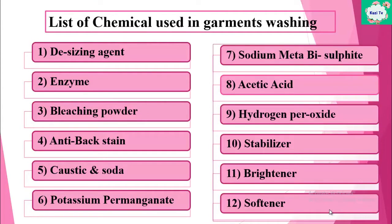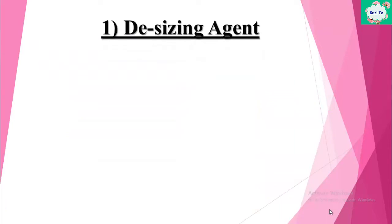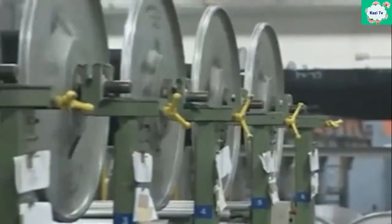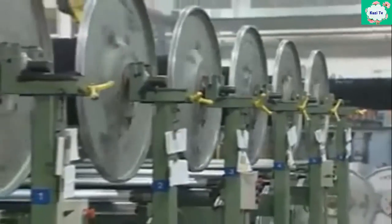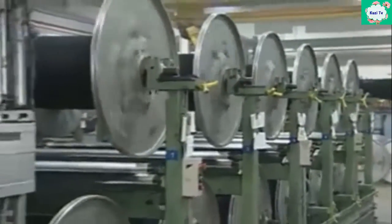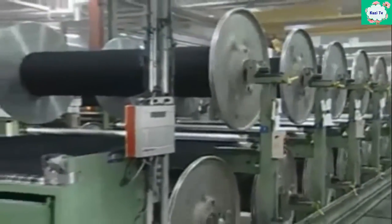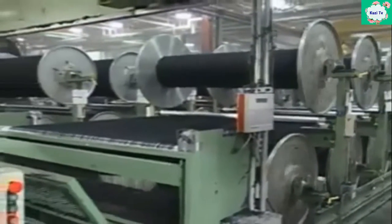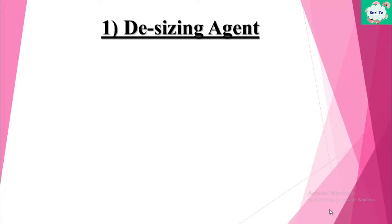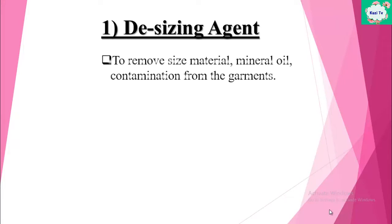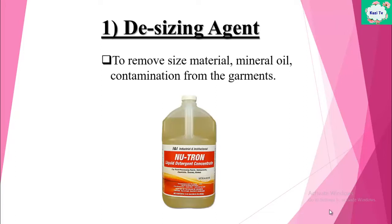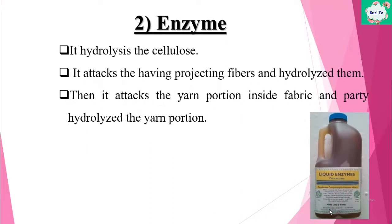Number one: desizing agent. We know that in the weaving process, size material is applied on the warp thread to increase strength. This size material makes the fabric hard, stiff, and hurts the skin. Hence, desizing agent is used in washing to remove size material and mineral oil contamination from the garments.